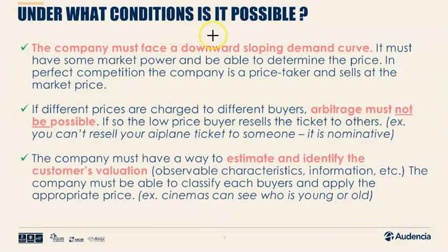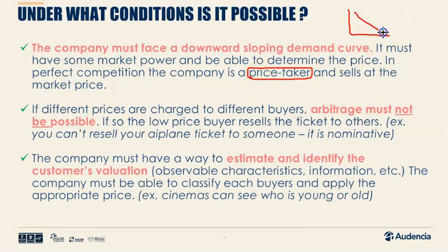To make price discrimination possible, we need three conditions. First, I need some market power — the ability to set different prices for different customers. That means I'm not in perfect competition, where I'm a price taker: supply and demand determine the price and I have to sell at that price. I can't fix the price unless I have some market power.